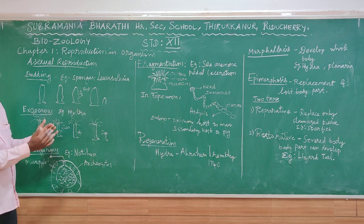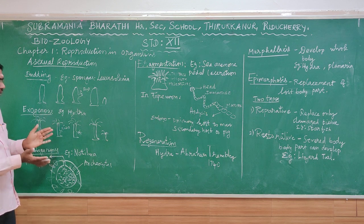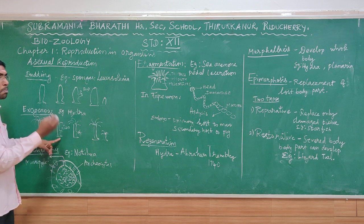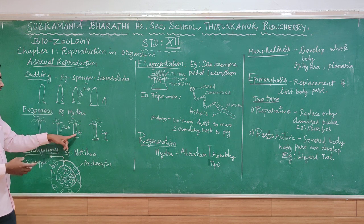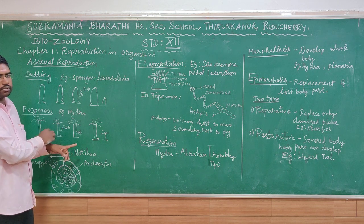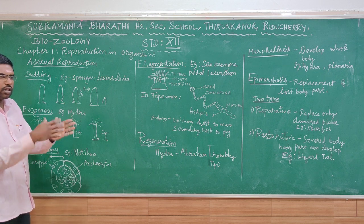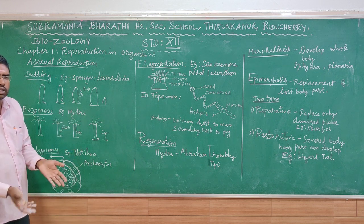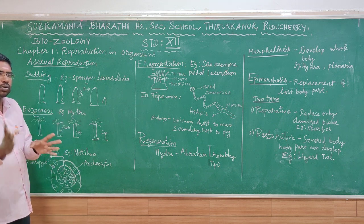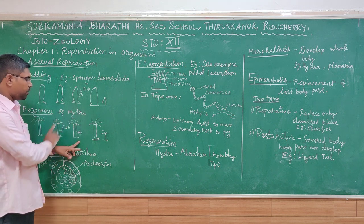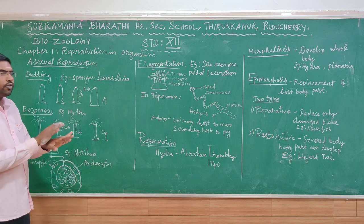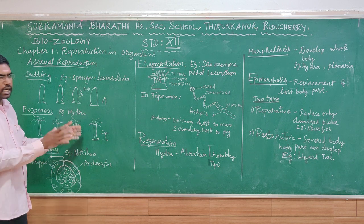If a bud starts on the body of the adult hydra, it will enlarge. That enlarged outgrowth is called the bud. As it grows, it begins to develop its own body structures, including a mouth and tentacles.